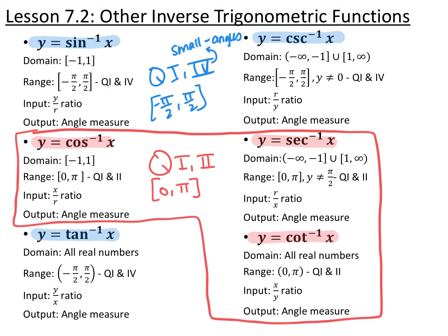Our mnemonic to remember is the sideways L. If they live inside the sideways L — cosine inverse, secant inverse, and cotangent inverse — they will give you output angle measurements in quadrants one and two, or between zero and pi. If they live outside the sideways L — sine inverse, cosecant inverse, and tangent inverse — they give you output angle measurements in quadrants one and four, between negative pi over two and pi over two.